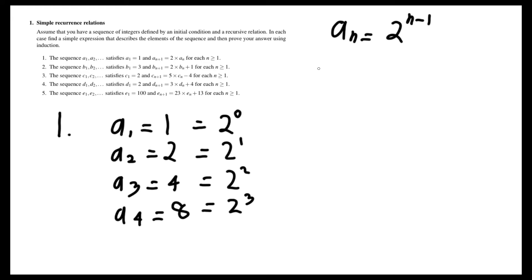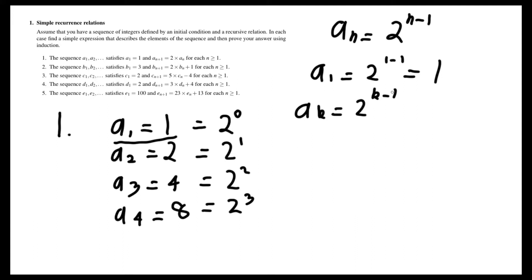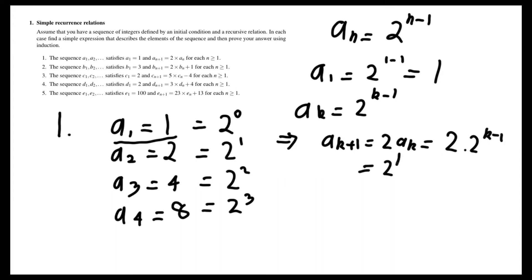So how do we prove this? By induction, looking at the base case. We know that according to this formula, a1 would have to be 2 to the 1 minus 1, which is 1, and that holds. So then assuming that it's true for aₖ being equal to 2 to the k minus 1, we know that implies aₖ₊₁ is double aₖ, which is equal to 2 times 2 to the k minus 1, which is 2 to the k, which we can also write as 2 to the k plus 1 minus 1. So it fits the formula, and we have proven this fact by induction.